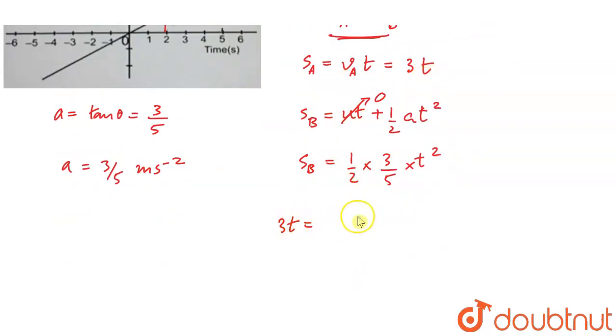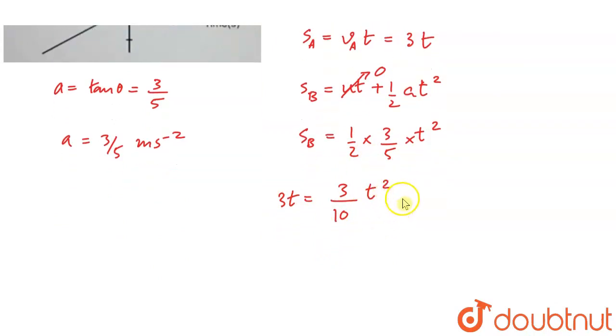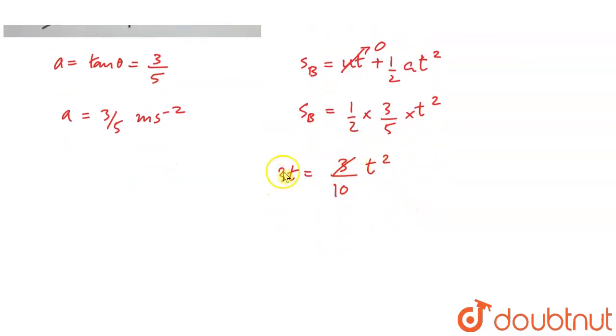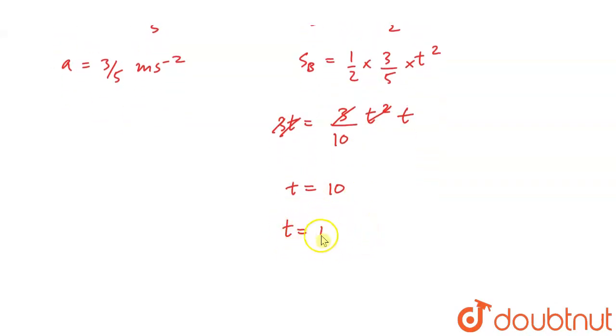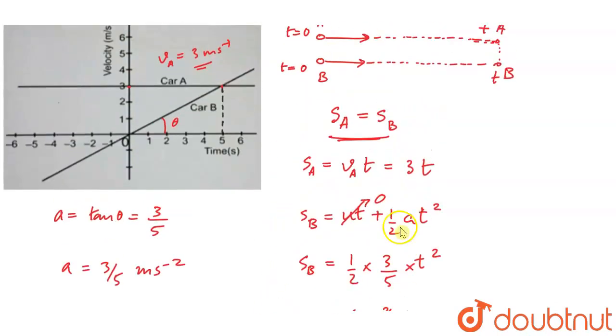Since s_A equals s_B, we have 3t equals (3/10) t squared. Solving this, 3 cancels, and we get t equals 10 seconds. So the time instant is 10 seconds when car B will cross car A.